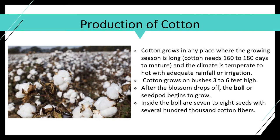Cotton grows on bushes from three to six feet high and blossoms into what's called a boll, or seed pod. Inside the boll, in addition to the fiber we see, there are seven to eight seeds with several hundred thousand cotton fibers. Each seed is essentially just a fiber — much like the silkworm — and each cotton seed has about 20,000 fibers growing from its surface.